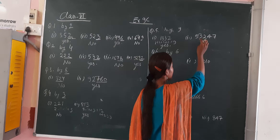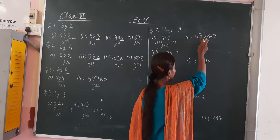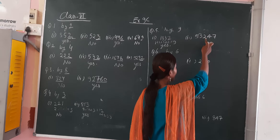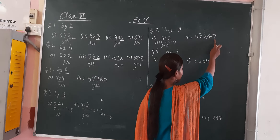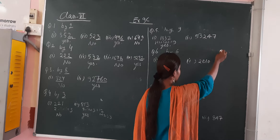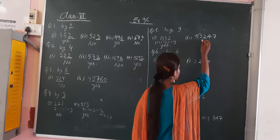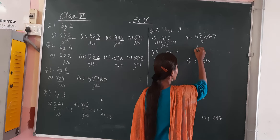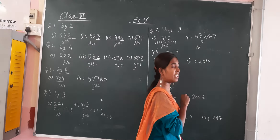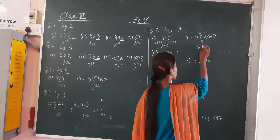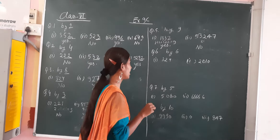Check this number also — digit sum: 5 plus 3 is 8, 8 plus 2 is 10, 10 plus 4 is 14, 14 plus 7 is 21. 21 is coming. 21 is not divisible by 9. So no, this digit is not divisible by 9.